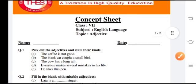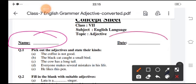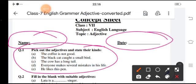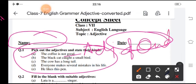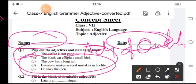First, you have to write your name here and the date. First question is pick out the adjective and state their kinds. The first one is the coffee is not good. It shows that the taste of the coffee is not good, that means it's the adjective of quality. So you have to do like this for B, C, D, E.